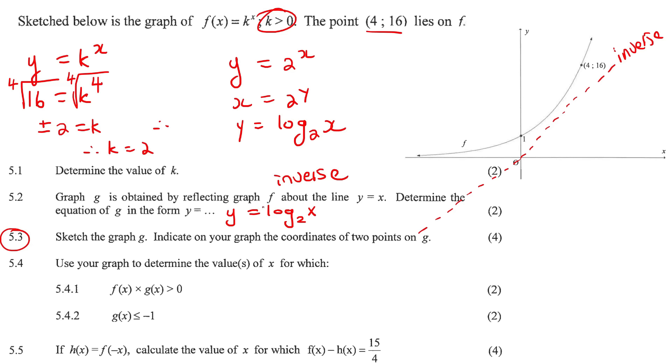Because what we must realize is you can go draw a log graph if you want, but we already have the original graph. And we know that when you take an inverse, the x's and y's switch around. So if we take the coordinates 4 and 16 and you switch those around, that becomes 16 and 4. And then if you take this coordinate which is 0 for x, 1 for y, you switch that around.